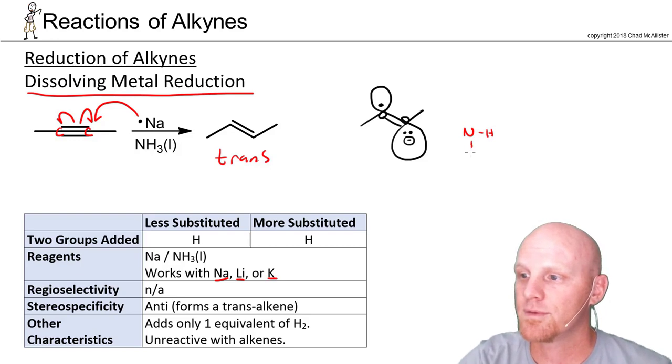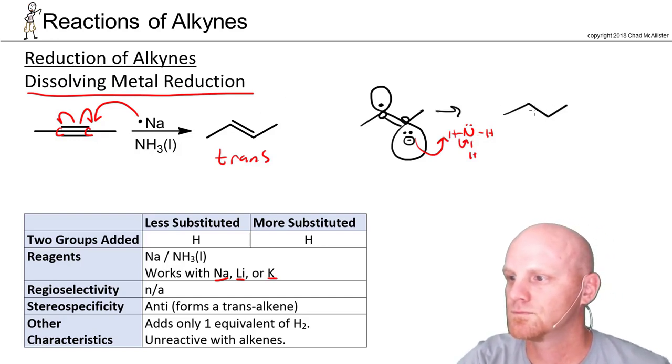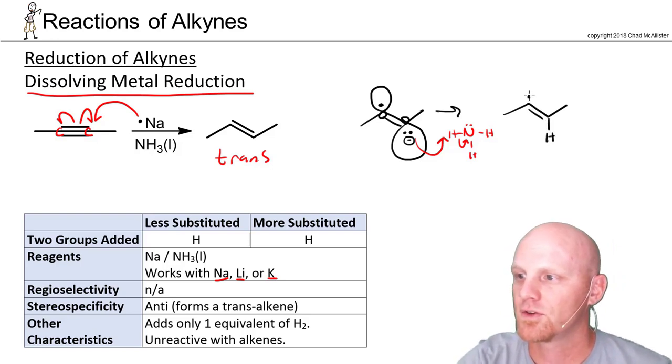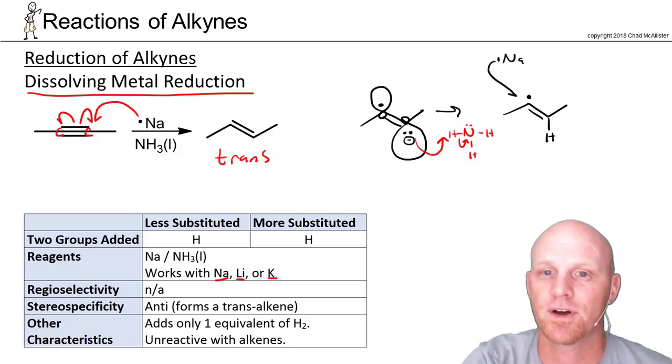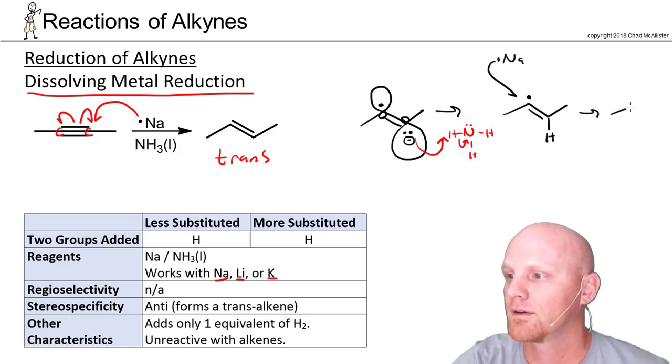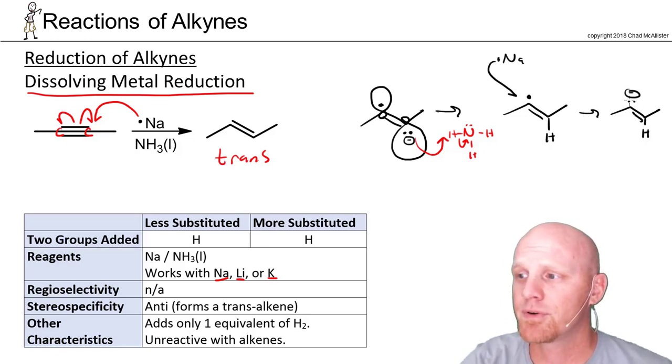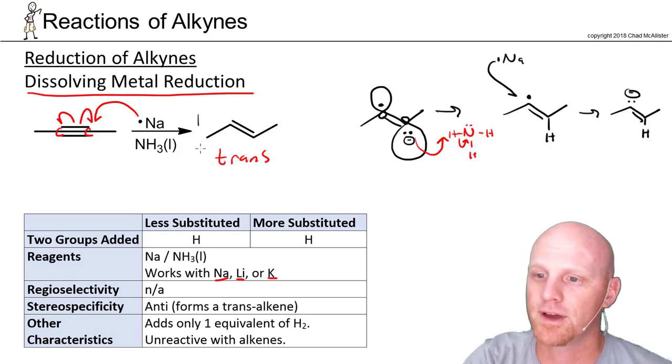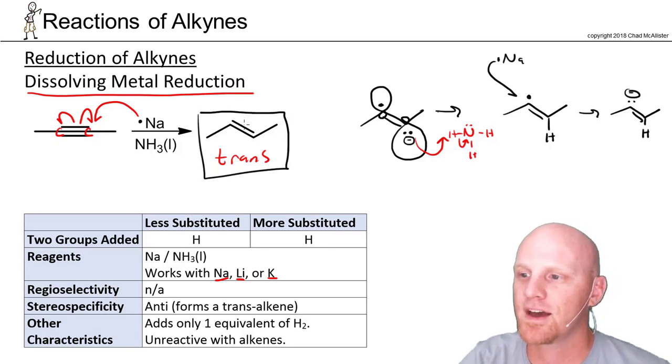We're going to come and grab a proton with this lone pair from an ammonia molecule. This will actually come and deprotonate ammonia. We'll add an H right there. Still have this radical here. Another sodium atom is going to donate its single radical electron to make a lone pair, and then we'll deprotonate ammonia again, forming our trans alkene. That's why the hydrogens add trans.